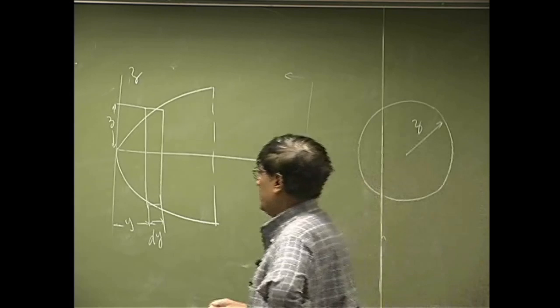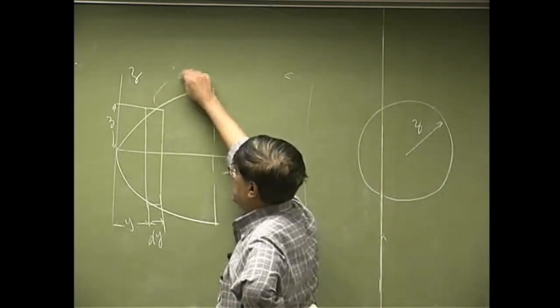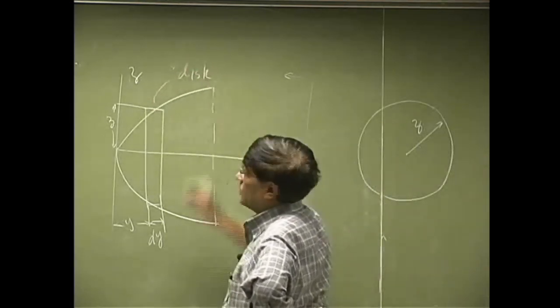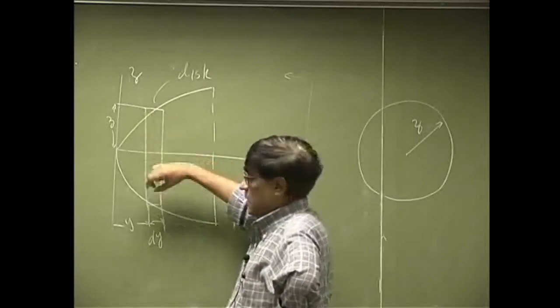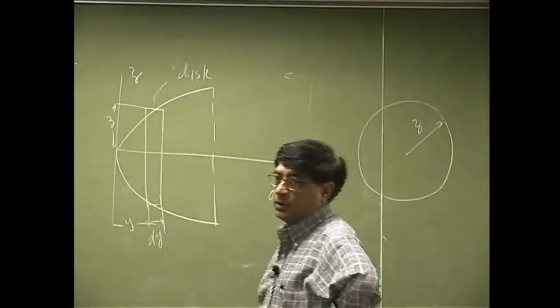So, you're looking at a disk, which has a radius of z, and it has a thickness of dy.